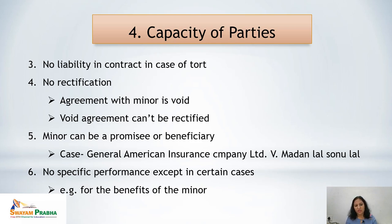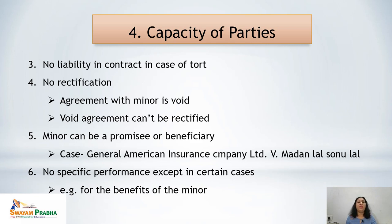A minor can be a promisee or beneficiary and can enforce the contract at law. This is illustrated in the case of General American Insurance Company Limited versus Madal Lal Sonu Lal: a minor insured his goods and when they were damaged he sued the company. The company pleaded the insured was a minor, but the court held that since he was a beneficiary, he could enforce the claim and the amount must be paid.